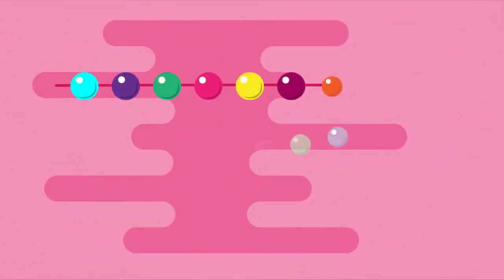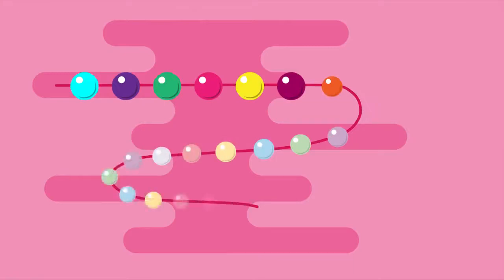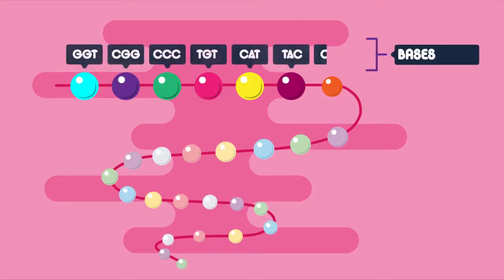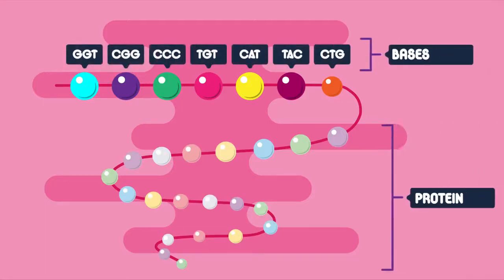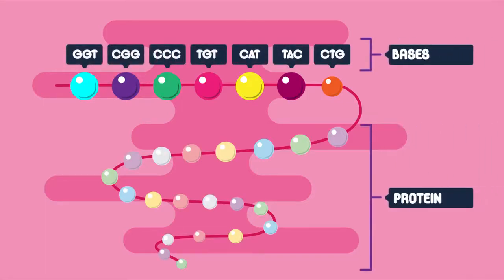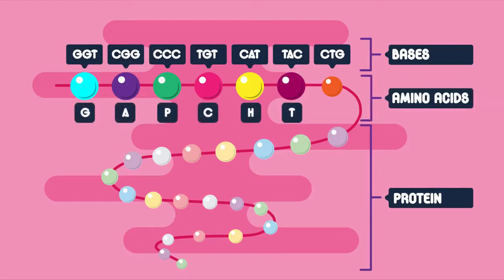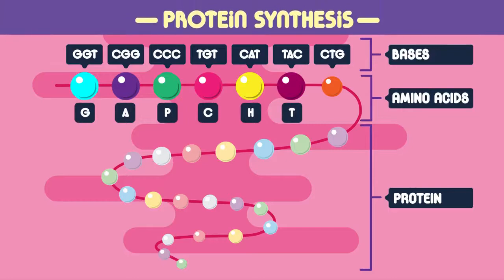Proteins are made of a long chain of amino acids, which has been coded for by DNA. The order of the bases of DNA determines which protein is made by coding for a specific order of amino acids. This is protein synthesis, and in this video we're going to look at how it works.